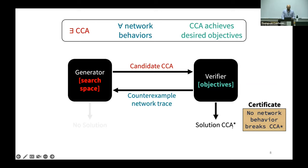Alternatively, it's possible that the generator can also fail to find a new candidate. This means that our search space is not sufficient to build a CCA that can meet our desired objectives under the specified network.